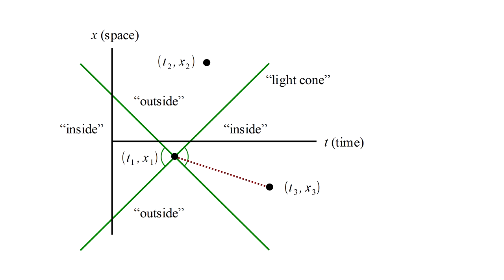at least in principle, for a clock to move between the two events and measure the elapsed proper time, s. We call this a time-like interval.